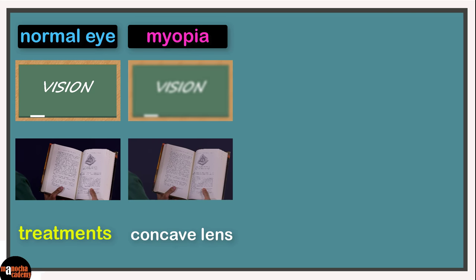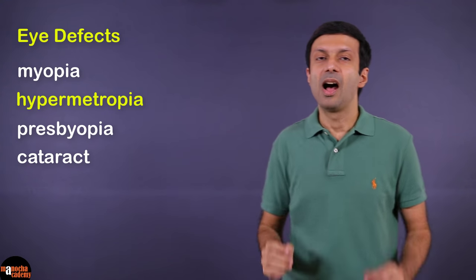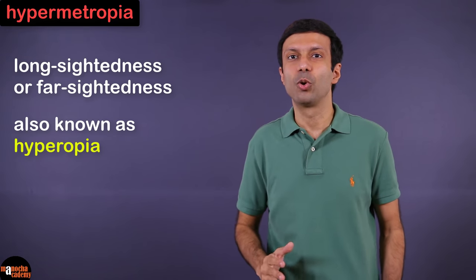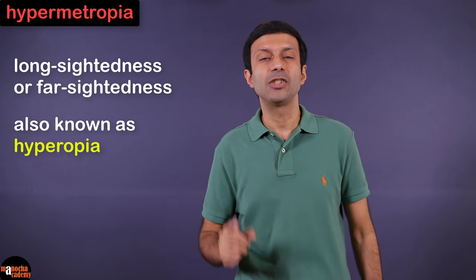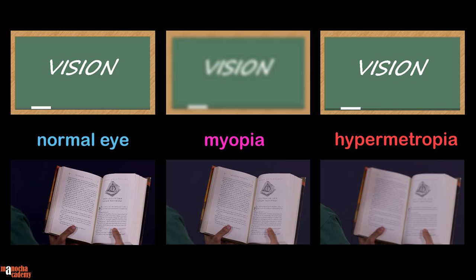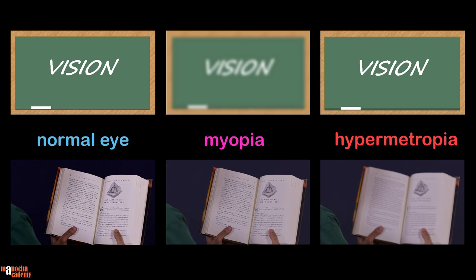Myopia or nearsightedness is corrected using a concave lens. Now let's take a look at the next type of vision defect: hypermetropia, commonly known as long-sightedness or far-sightedness, also known as hyperopia. For a person with a normal eye, both the nearby book and the distant board appear clear. For a person with myopia, the nearby book is clear but the distant board appears hazy. Hypermetropia is the opposite of myopia — for a person with hypermetropia, the nearby book appears blurry but the writing on the distant board appears clear.